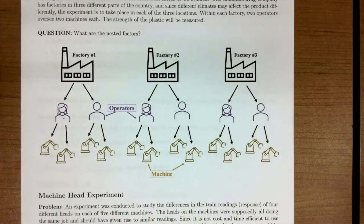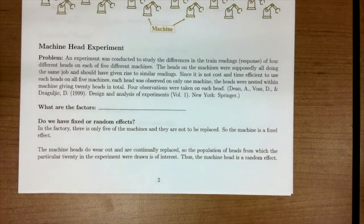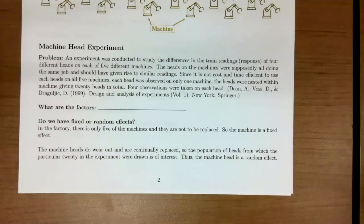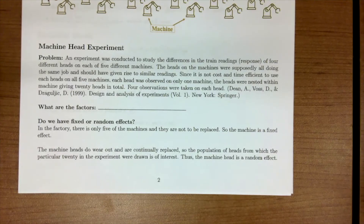Now let's go to one more example that we'll be using for the rest of our lectures — it's called the machine head experiment. An experiment was conducted to study the differences in strain reading responses of four different heads on each of five different machines. The heads on the machines were supposedly all doing the same job and should have given rise to similar readings, so something of interest is whether there's variability among the machine heads. Since it's not cost and time efficient to use each head on all five machines, each head was observed on only one machine. The heads are nested within the machines, giving us a total of 20 heads with four observations taken each.